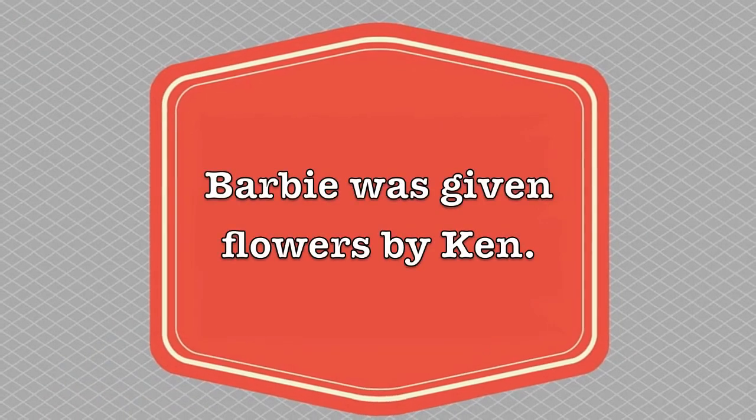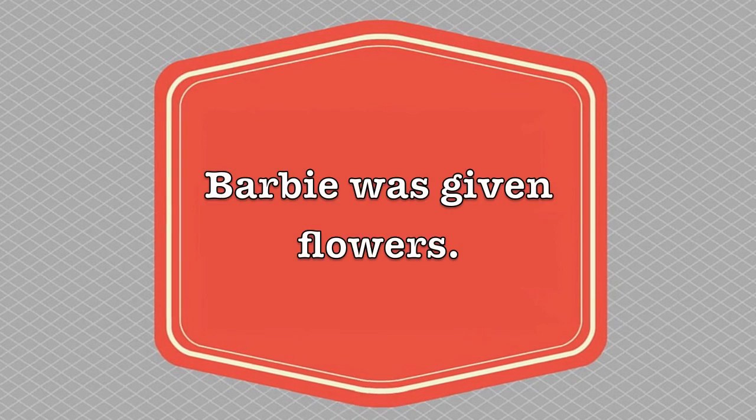In passive constructions, the sense of agency gets fuzzy. Let's return to the Ken and Barbie sentence: 'Barbie was given flowers by Ken.' Who's the actor? It's still Ken. Ken drove to the florist shop, he picked out the flowers, he plunked down his hard-earned money, he carried the flowers all the way back to Barbie's house. But where's Ken in the sentence? He's tucked away in a prepositional phrase at the very end. It's just not fair. Or consider this version: 'Barbie was given flowers.' Ken — the guy who went to all the trouble — has disappeared completely.